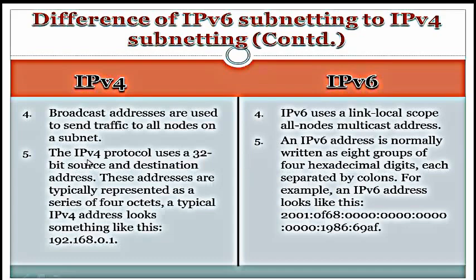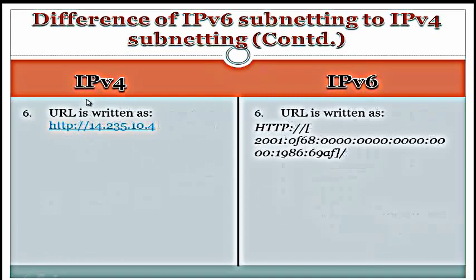Fifth difference: the IPv4 protocol uses a 32-bit source and destination address, typically represented as a series of four octets. A typical IPv4 address looks like 192.168.0.1. In IPv6, the address is normally written in eight groups of four hexadecimal digits, each separated by colons — for example, 2001:0F68:0000:0000:0000:0000:1986:69AF. In IPv4, a URL is written like http://14.235.10.4, but in IPv6 we use square brackets around the address in the URL.